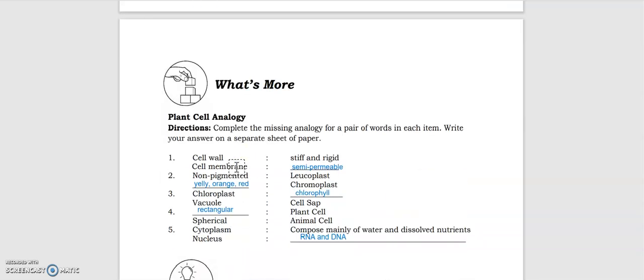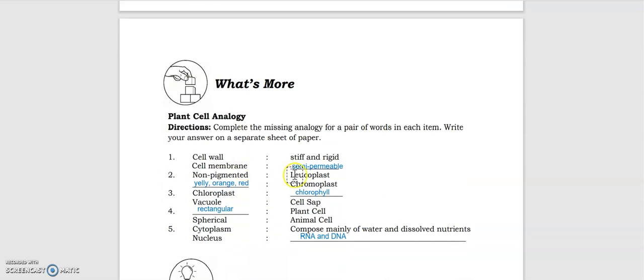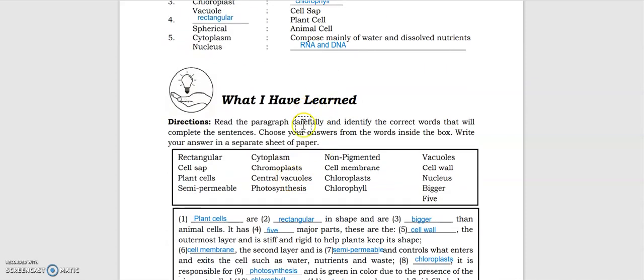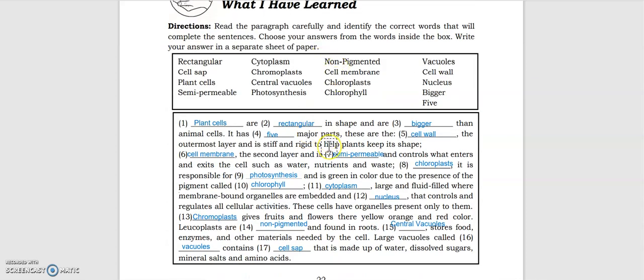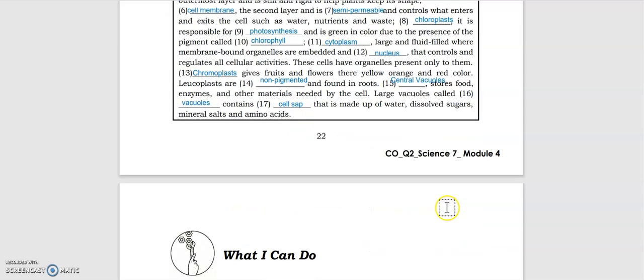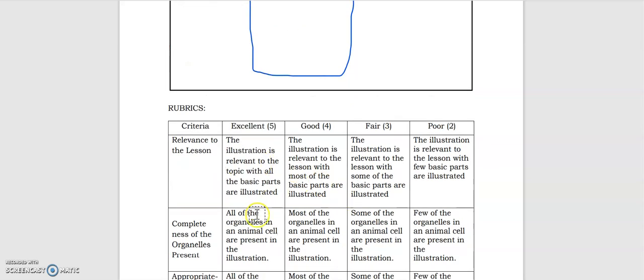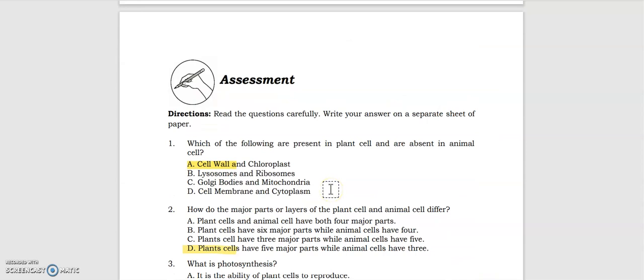For the 'What's More' portion, it has something to do with the analogy. I'll just flash the correct answers - anyway, we discussed it already. And so with the 'What I Have Learned' portion, you may pause this video if you want to. Then the 'What I Can Do' - you are going to draw the plant cell and don't forget to label the major parts and organelles present, then the rubrics.